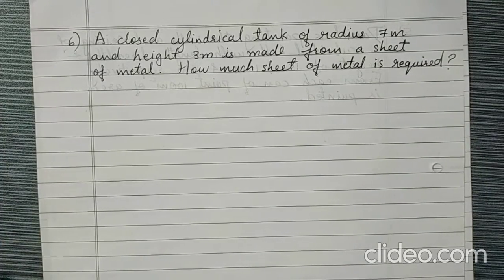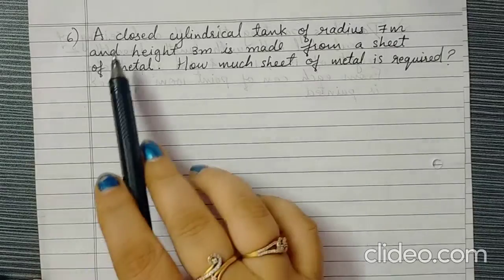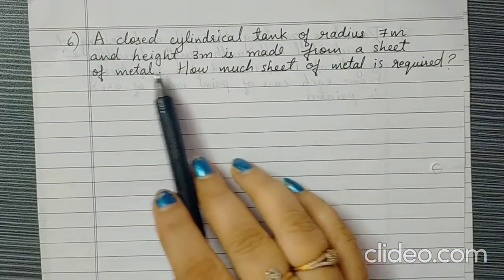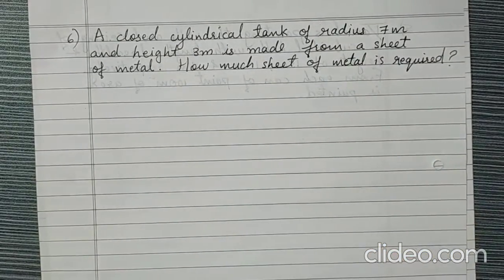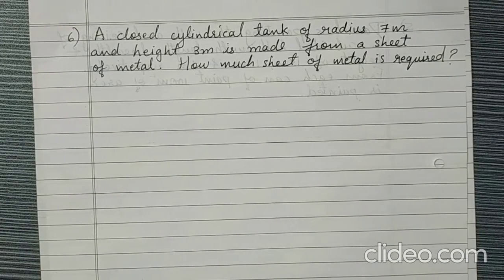Welcome back students. Now let us see another example. A closed cylindrical tank of radius 7 meter and height 3 meter is made from a sheet of metal. How much sheet of metal is required?